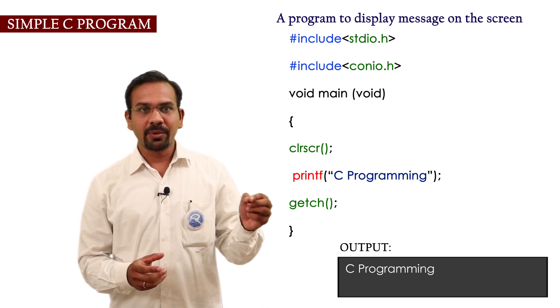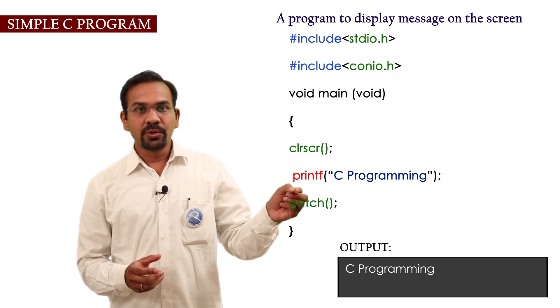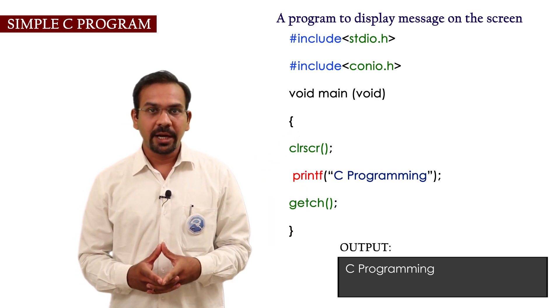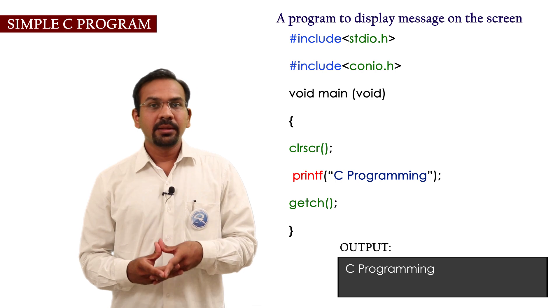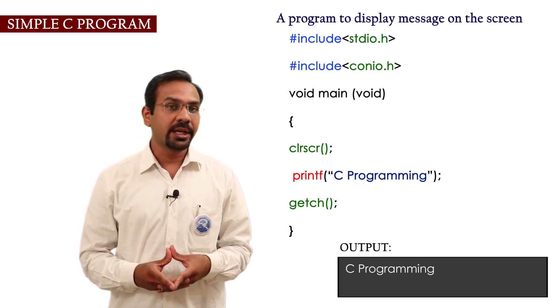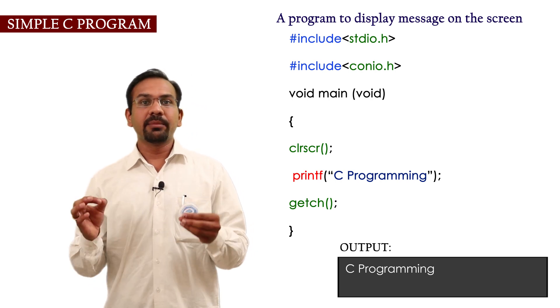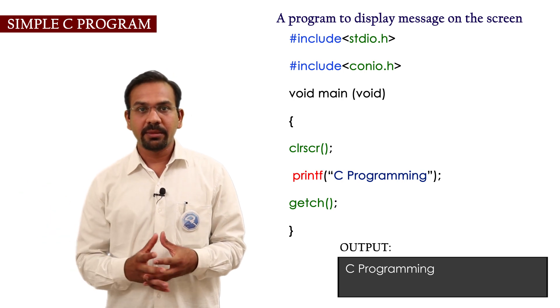Before starting a program I am using clrscr and to hold the output getch function is used in the end. We terminate the main program with closing curly bracket.